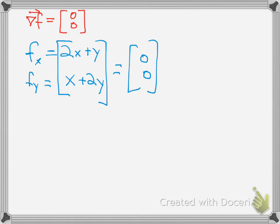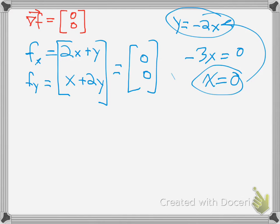Then you solve for your critical points. For this top equation, you solve for y and get y equals negative 2x. Then you plug this into the equation to solve for x. You get x minus 2x, which equals 0, so negative 3x equals 0, so x equals 0. Then you plug that in and also get y equals 0. So your critical point is (0, 0).